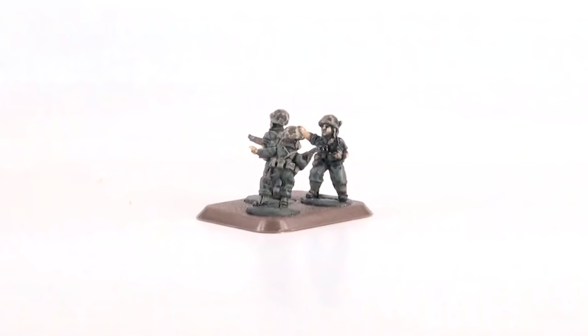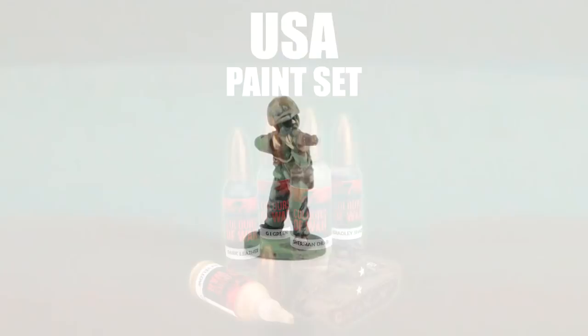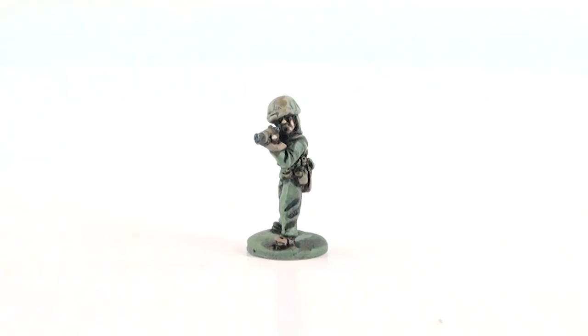I started by spraying a black primer on this figure. Then I airbrushed on the base uniform color, in this case GI Green. It's certainly a time saver to spray the uniform color on. There's no reason not to brush paint it on, and that works just as well. It just takes a little bit longer to do.